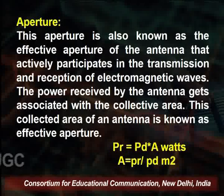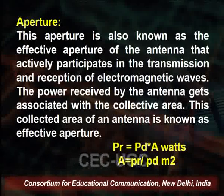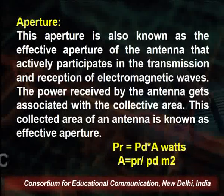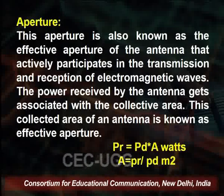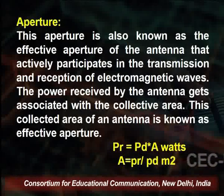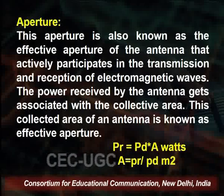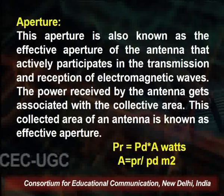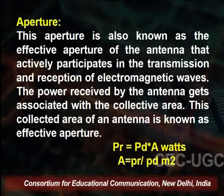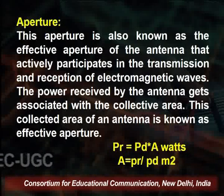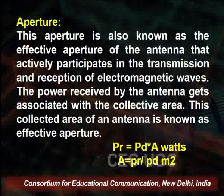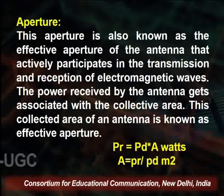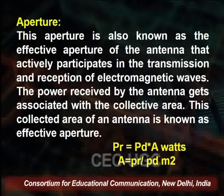The next parameter is aperture, also known as the effective aperture of the antenna, which actively participates in the transmission and reception of electromagnetic waves. The area is designed in such a manner so that we can get more gain. The effective aperture is defined by: Pr = Pt × A, or equivalently, aperture A = Pr / Pt, where Pr is received power and Pt is transmitted power.